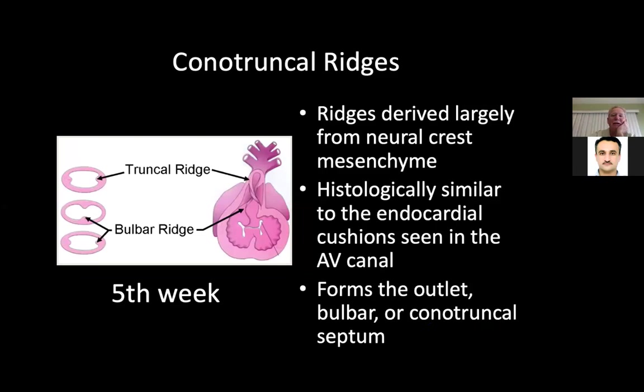You see this truncal ridge — it forms almost like a corkscrew that turns as it goes. The ridge is derived largely from neural crest mesenchyme. So any child that has a neural crest deformity might have outflow tract abnormalities, and that's why if we see neural crest deformities in other parts of the body, we always have to do an echocardiogram.